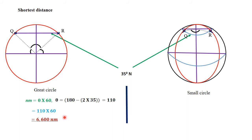The formula gives 110 times 60, which is 6600 nautical miles. This logic applies generally: for points along 40 degrees north, the angle difference would be 180 minus 2 times 40, giving 100 degrees. So the distance from Q to R through the north pole is 6600 nautical miles.